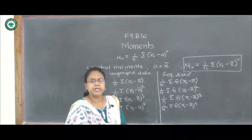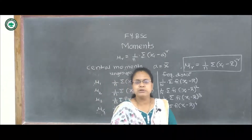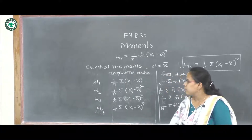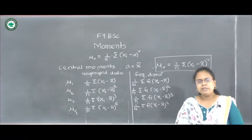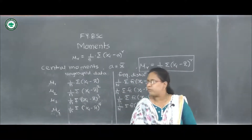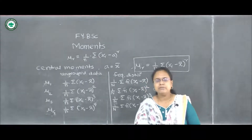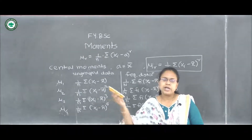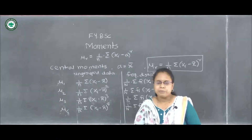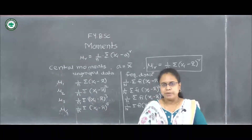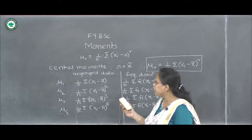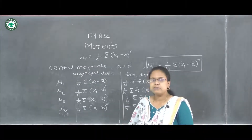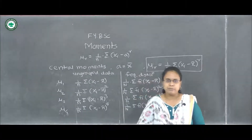To obtain the skewness and kurtosis of the data we require these moments. We can also calculate higher-order moments by putting r as 5, 6, 7, and so on — we can obtain raw and central moments of any order. But basically, up to order 4, we require the raw moments and central moments.